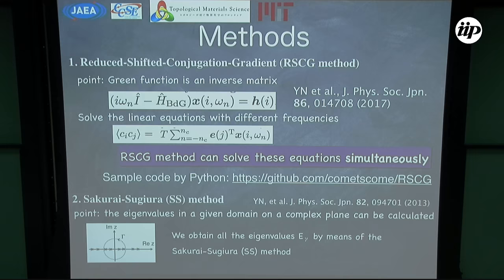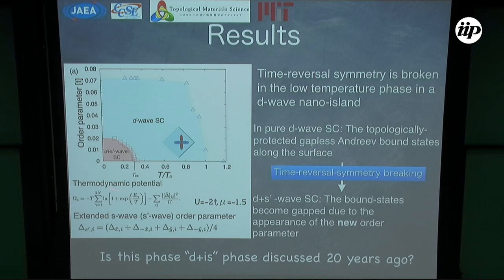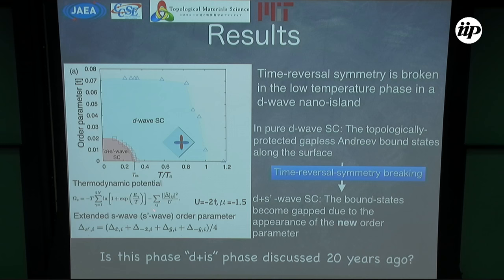This is the result. This is the order parameter as a function of temperature. We can clearly see that at T equal to 0.3 Tc there is a phase transition. Above this transition temperature T_cs, there is a pure d-wave superconductor in the nano island. Below T_cs there is another phase — a d+s' wave state, where s' is the extended s-wave state. I confirm that in the high temperature region there is a pure d-wave superconductor with zero energy Andreev bound states from the BdG equation.